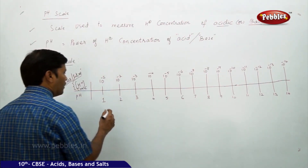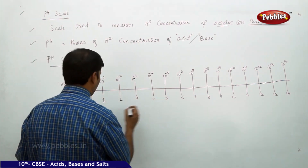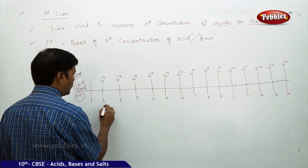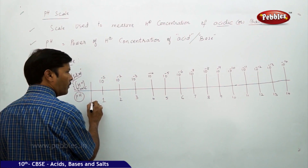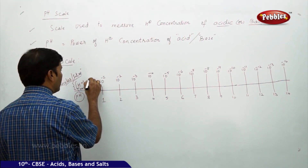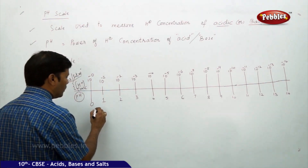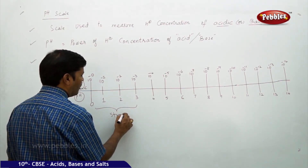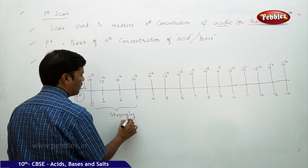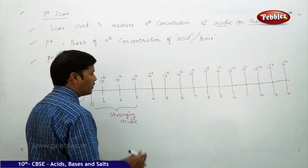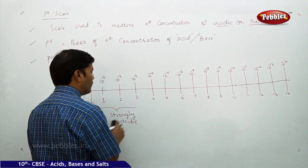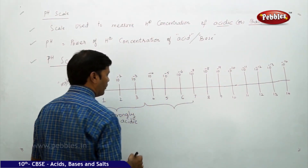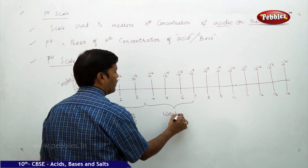From pH 0 to around 3.5, the solution is strongly acidic. From pH 3.5 to 6.9, the solution is weakly acidic.